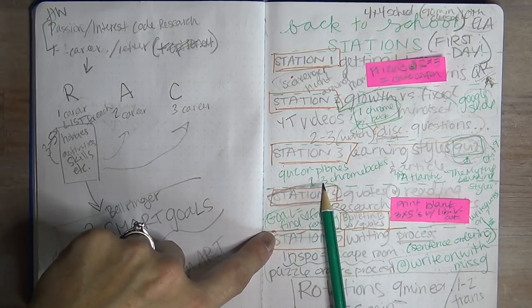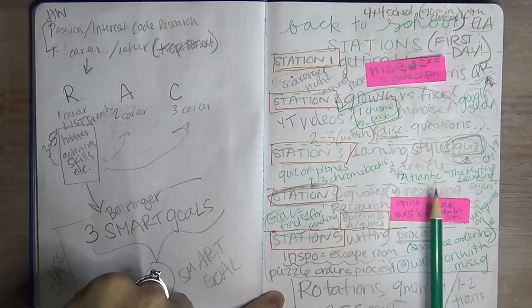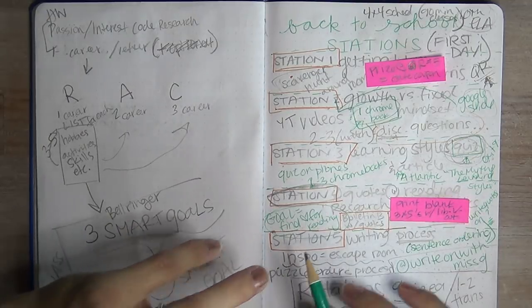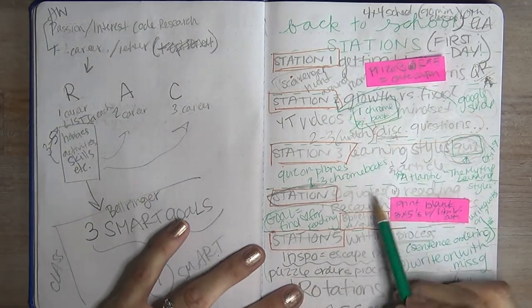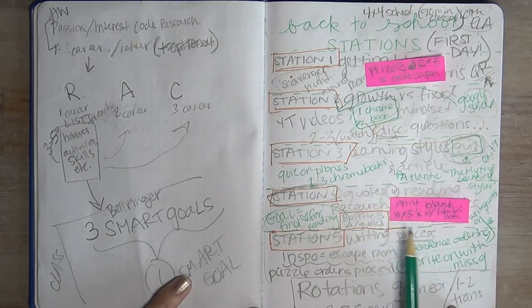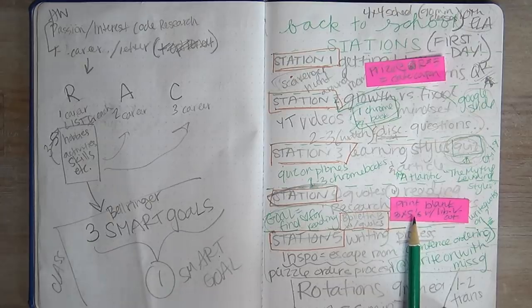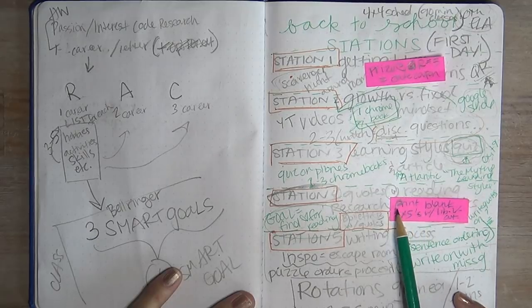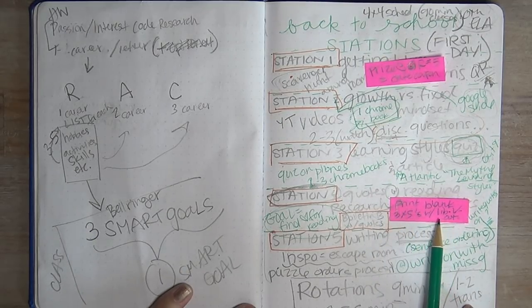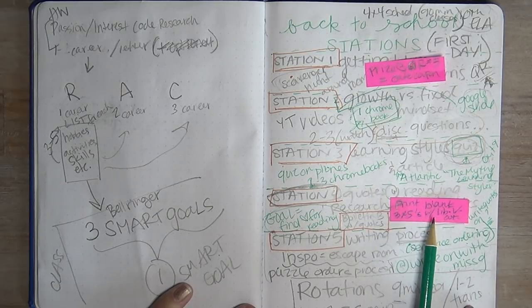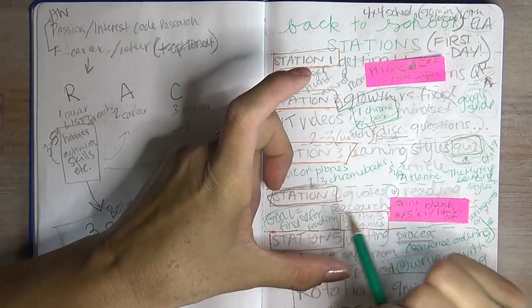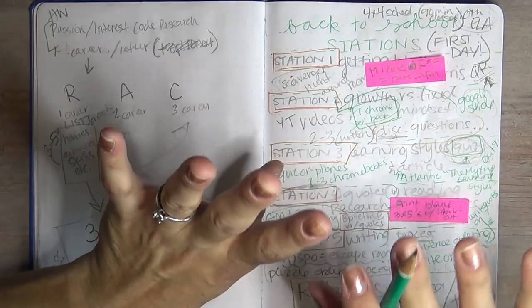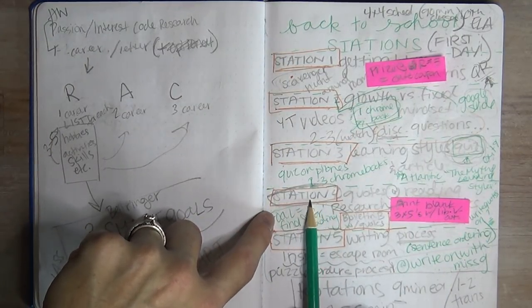Station number four is each kid is going to find a quote about reading, whether it's the importance of reading or how people learn how to read. This is just to put some sort of idea for them that reading is not going to be just something that is mandated, but we're going to call it cultivate a love for reading. And reading doesn't always mean big huge novels. I'll have a couple of quotes already picked out and then I'm going to print onto cardstock or onto three by five cards something that looks like an old fashioned library card, like a checkout card where they can write their name and the date and then write down their quote and then they'll put it up on a bulletin board. So that is kind of like an interactive bulletin board fun thing.